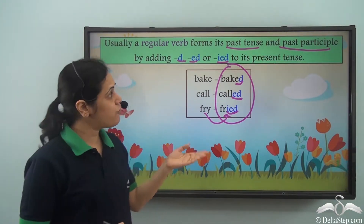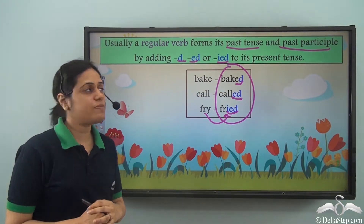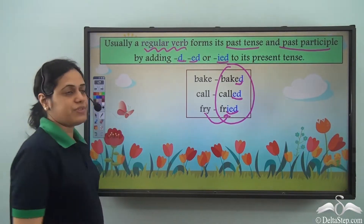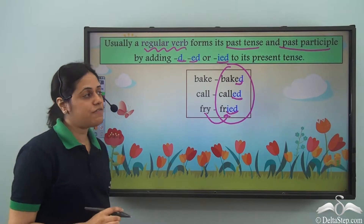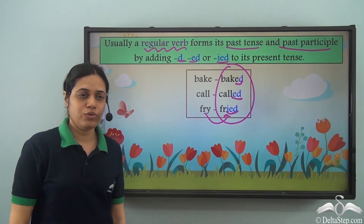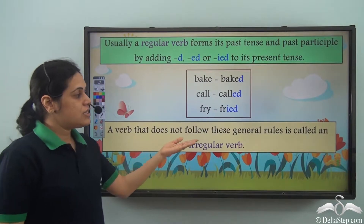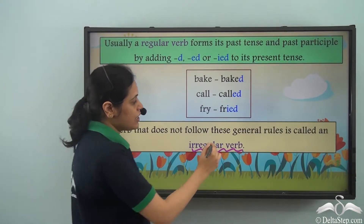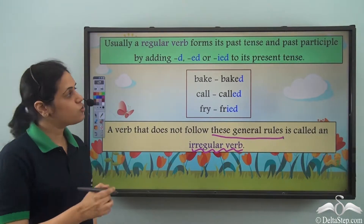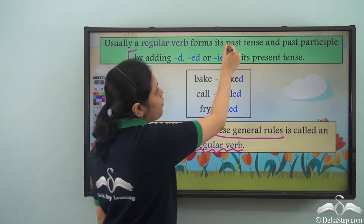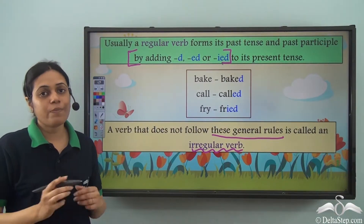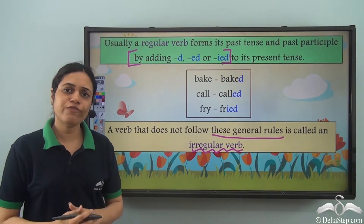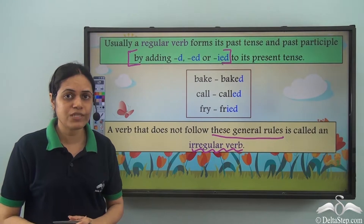Such verbs which form their past tense and past participle forms by adding d, ed, or ied are called regular verbs. But there are certain verbs which don't follow this rule, and such verbs are called irregular verbs. This means they don't form their past or past participle forms by adding d, ed, or ied. Let us see how they form their past forms or past participle forms.